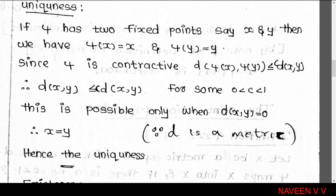Since φ(x) = x and φ(y) = y, we get d(x, y) ≤ c · d(x, y) for some 0 < c < 1. For this condition to hold, we need d(x, y) = 0. Otherwise if d(x,y) were non-zero, the inequality cannot hold since c < 1. Since d is a metric, d(x,y) = 0 implies x = y.